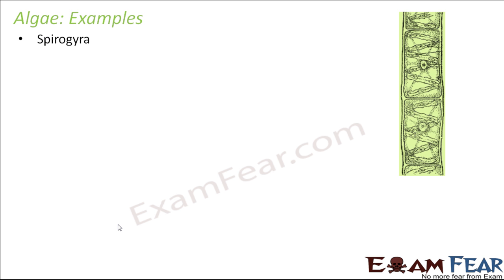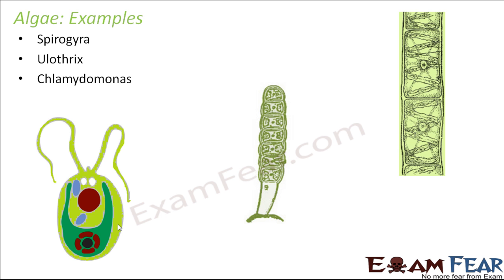Some examples of algae are Spirogyra, Ulothrix, and Chlamydomonas. The names may sound tough, but detailed study of each type is reserved for higher classes — video lessons are available for those who want a deeper understanding. With this, we have discussed all four major classes of microorganisms.